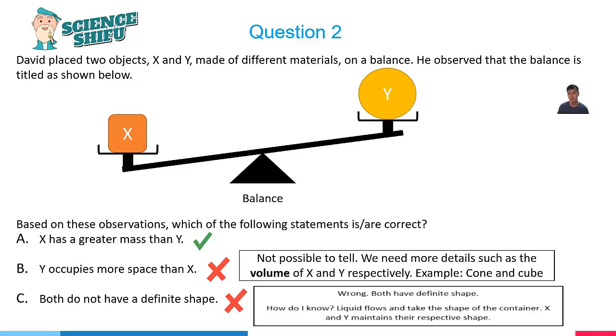As for sentence C, the explanation is also not possible to tell. To determine if an object has a definite shape or not, we will need to put these two objects into different containers. If we manage to occupy the space inside a container, then the object has no definite shape.